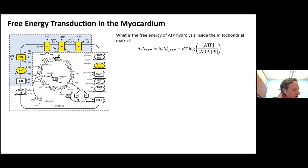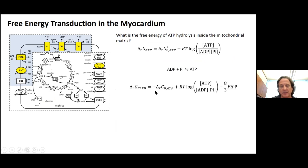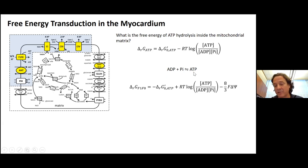What's the free energy of ATP hydrolysis inside the mitochondrial matrix? Inside the mitochondria, ATP synthesis is happening. The Gibbs energy equation looks like the hydrolysis equation but with opposite signs for those terms, and with an additional term involving the membrane potential — the stoichiometry eight-thirds times Faraday's constant times the membrane potential.